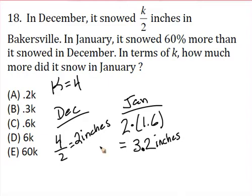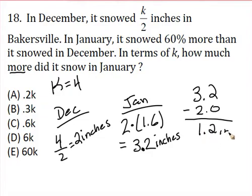So we went from 2 inches all the way to 3.2 inches. And that's important because we want to know how much more did it snow, not how much did it snow in January, but how much more. So we've got to take the difference of the two amounts. And you can do this in your head, I'm just going to write it out so we have it. And we've got 1.2 inches. That's the difference. So that's our answer, that's the magic number we're looking for.